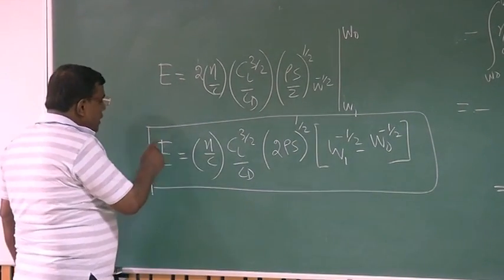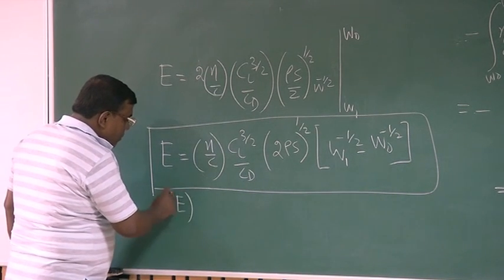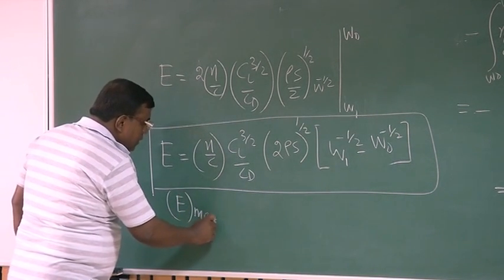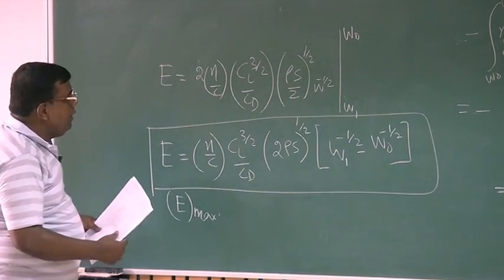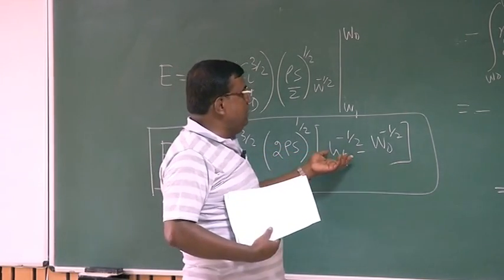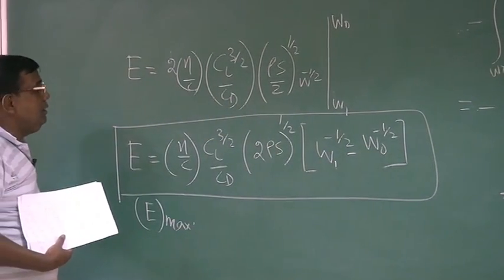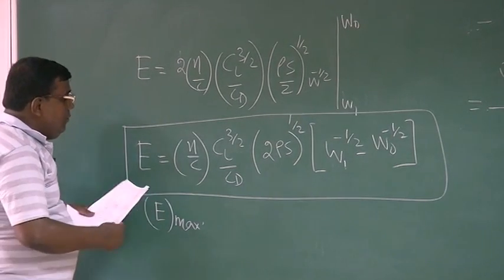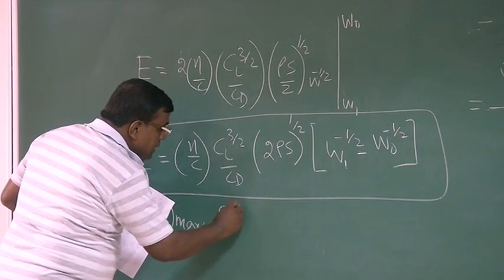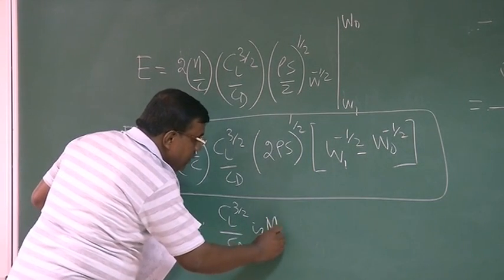See what we are seeing here? Seeing that E will be maximum for a given altitude, given initial weight and final weight or fuel weight, E will be maximum when CL^(3/2) by CD is maximum.